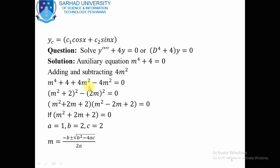So m⁴ + 4 + 4m² - 4m² = 0. Now m⁴ + 4m² + 4 gives the formula (a+b)², so (m² + 2)². This formula gives m⁴ + 4m² + 4. Now minus 4m² means (2m)². We obtain a difference of squares formula a² - b² = (a+b)(a-b), so (m² + 2 + 2m)(m² + 2 - 2m). These are two quadratic equations.